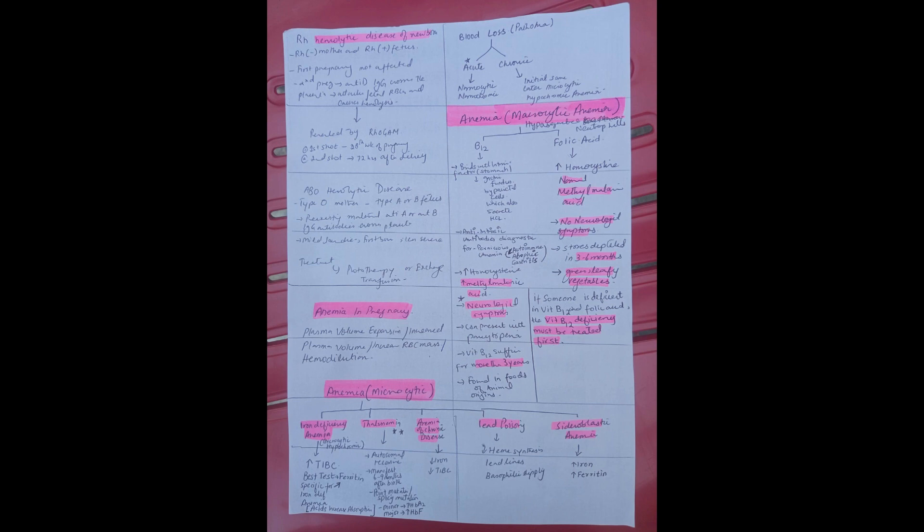The preventive treatment for Rh hemolytic disease is RhoGAM, that is Rh immunoglobulin, that can reduce the mother's reaction to their baby's Rh positive blood cells.